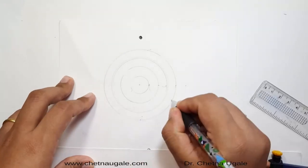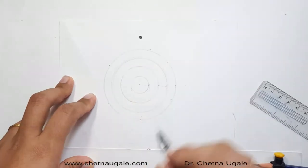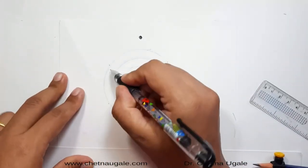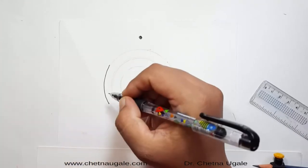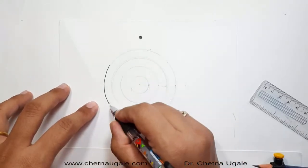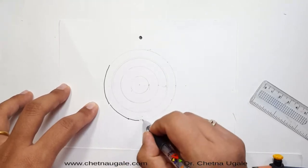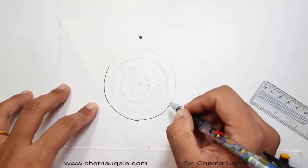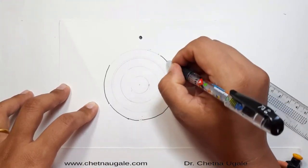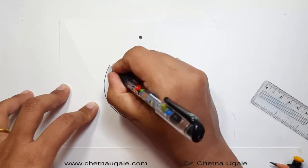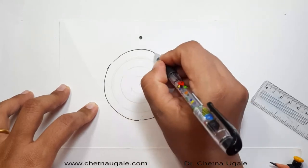This circular arrangement is typically called estivation. As the flower is pentamerous, let's divide the circle into five equal halves. We start with the outermost floral whorl, that is the calyx, which is represented by the sepal — first sepal, second, third, fourth, and fifth.